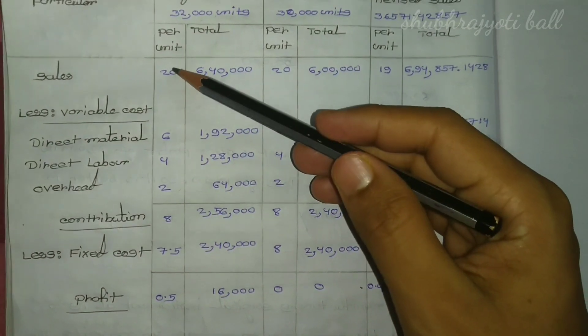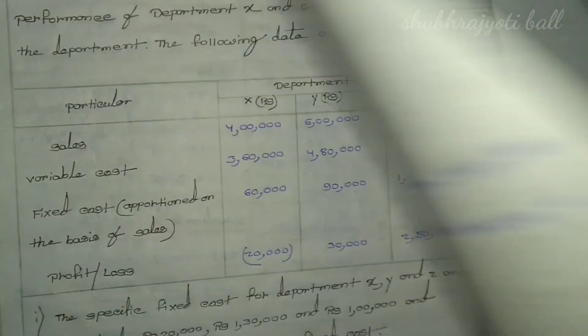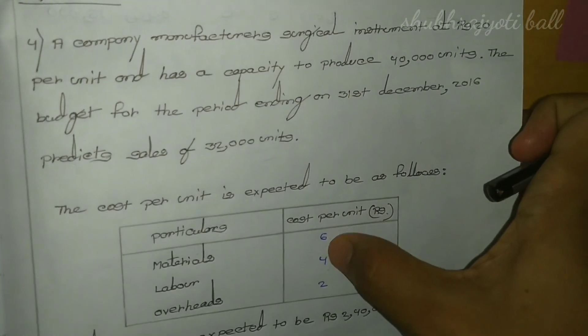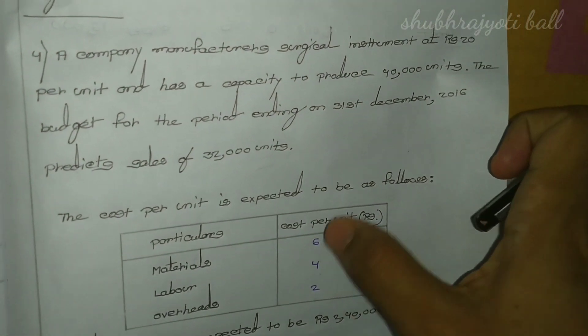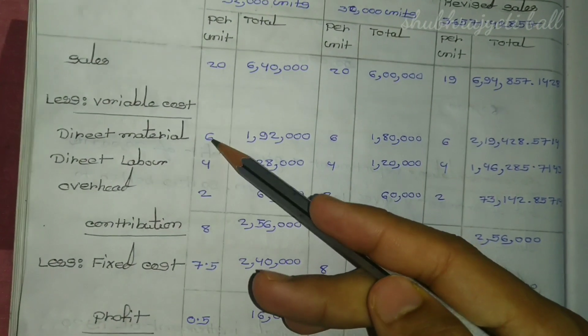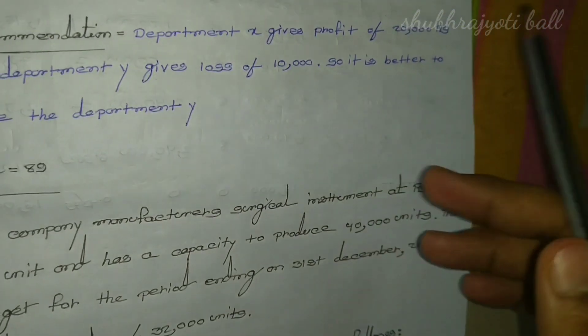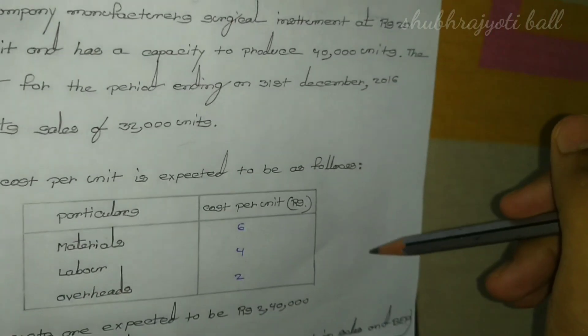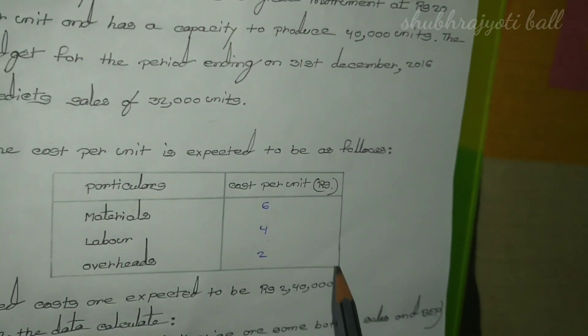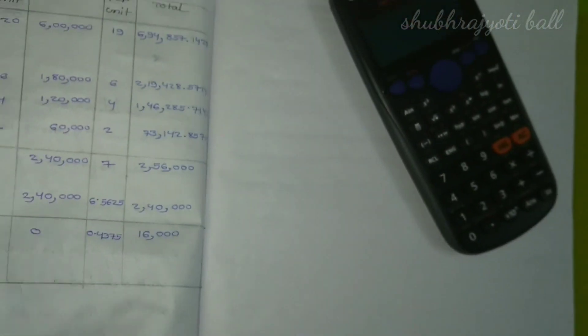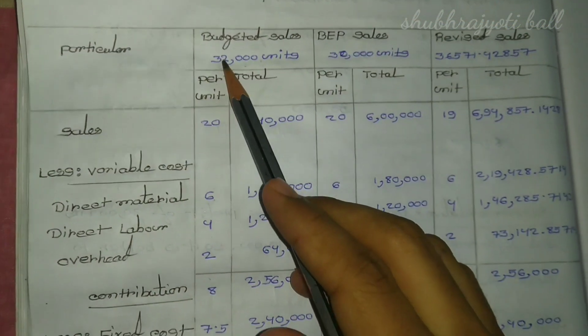To sum dekh lete hain. Sum mein bola gaya tha: sales hoga ₹20. Variable cost: ₹6, ₹4, and ₹2 ho jaega. And units are thirty-two thousand (32,000).